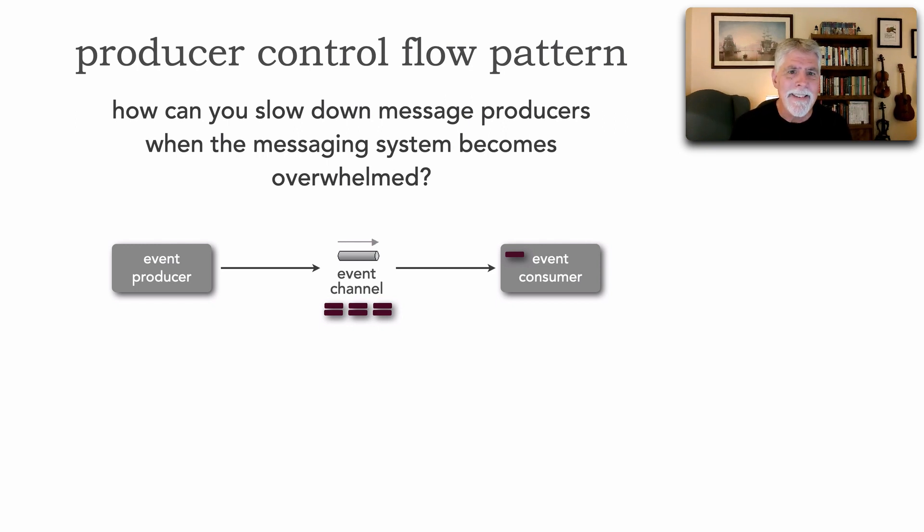So the idea with the producer control flow as an automated self-healing kind of pattern is to programmatically tell those event producers to slow down. You can still process trades but can you delay them just a little bit while we take care of this bottleneck? That's the idea of the producer control flow pattern.